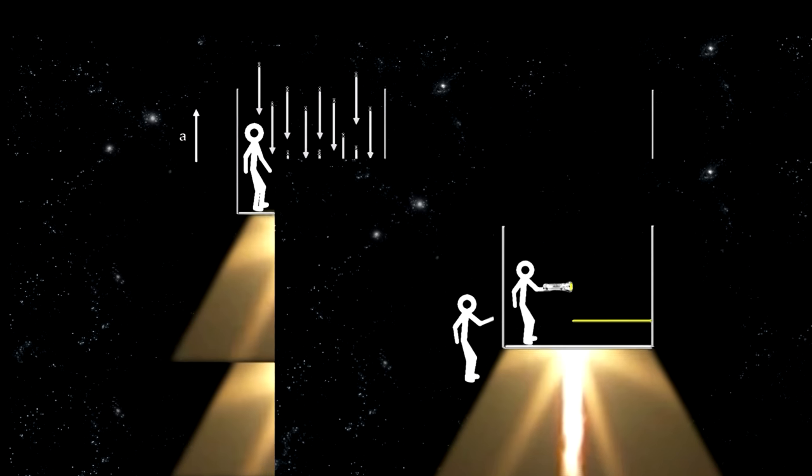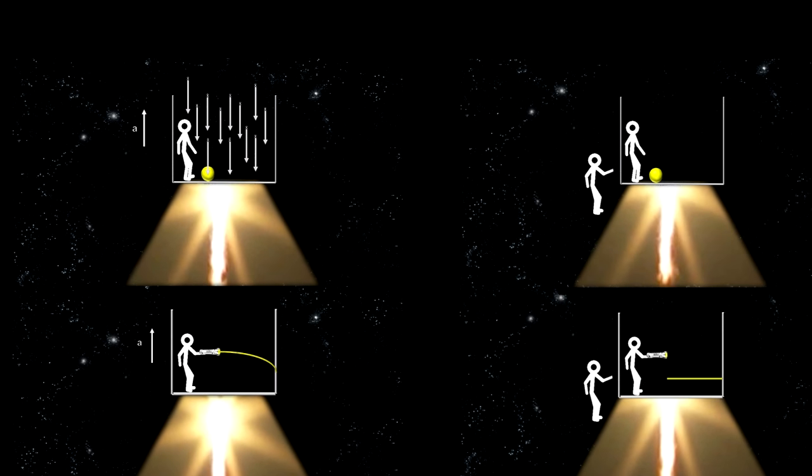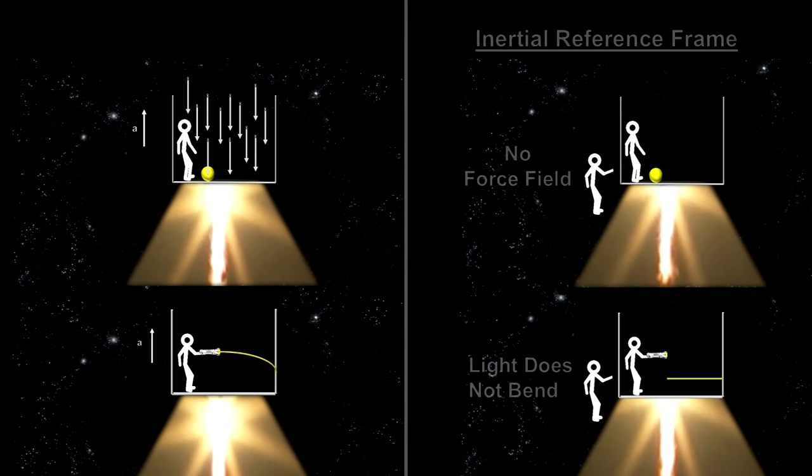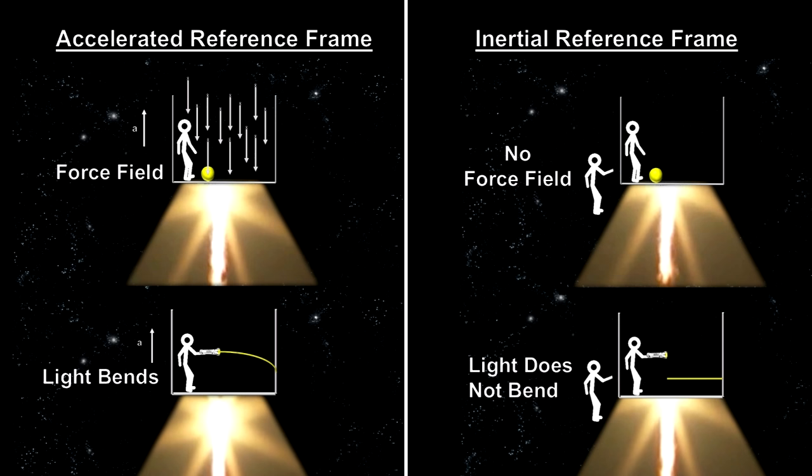Who is right? Before Einstein's general theory of relativity, we would have said the inertial observer was correct, and the person in the elevator was fooled into thinking he is in a gravitational field. But according to general relativity, they are both right in their own reference frame.